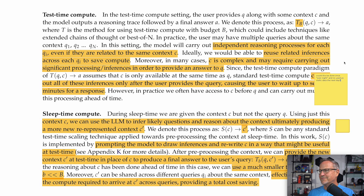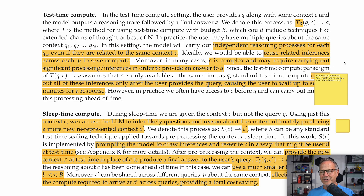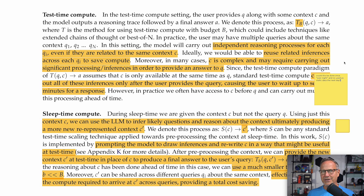My suggestion to extend this model: if you have a customer support document that's updated once a day, overnight when inference costs might be cheap, you could run sleep time compute across your database one time and generate a context you could reuse all of the next day. That's even better than the real-time sleep time compute they're discussing, because instead of generating close to query time, you could generate answers hours or even days ahead of time if the database doesn't change much. That would allow very low per-token costs amortized over many, many potential questions.